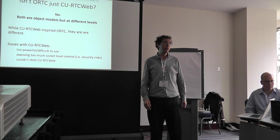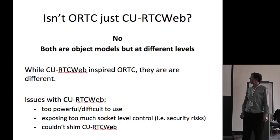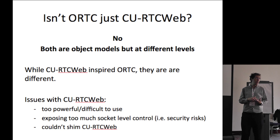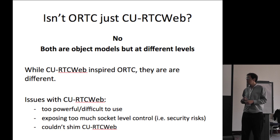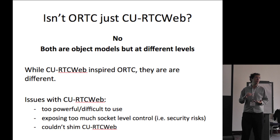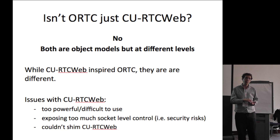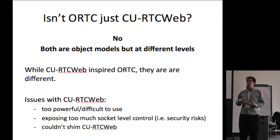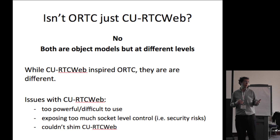Is ORTC just a rewrite of C-ORTC web? The answer is no — they are different and operate at different levels. C-ORTC web is much more low level and allows a lot of control over detailed aspects of how the protocol works. This doesn't, and there are a lot of security reasons for that — we didn't want to expose too much control at that level. The bottom line is we wanted to be able to produce a shim, and if you didn't have that low-level control, you couldn't produce a shim. It was really important for us to have a migration strategy so people could use the API on top of browser implementations without having to wait for the browser to implement it directly.